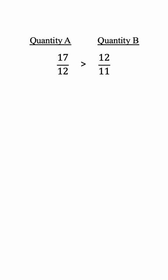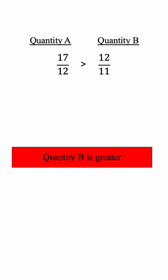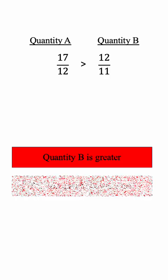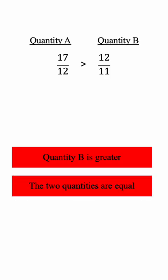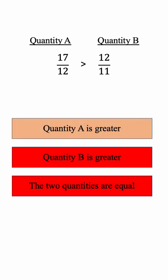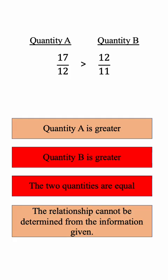Based on that, we have ruled out quantity B is greater and the two quantities are equal. Now we only have either quantity A is greater or the relationship cannot be determined from the information given.